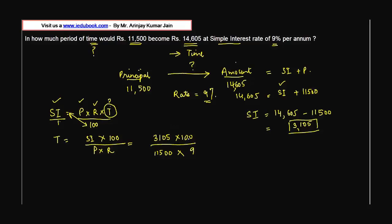Simplifying: the two zeros cancel. Then divide numerator and denominator by 5 — 11,500 becomes 2,300 and 3,105 becomes 621. Then divide by 9: 2,300 becomes... working through the arithmetic gives Time = 3.